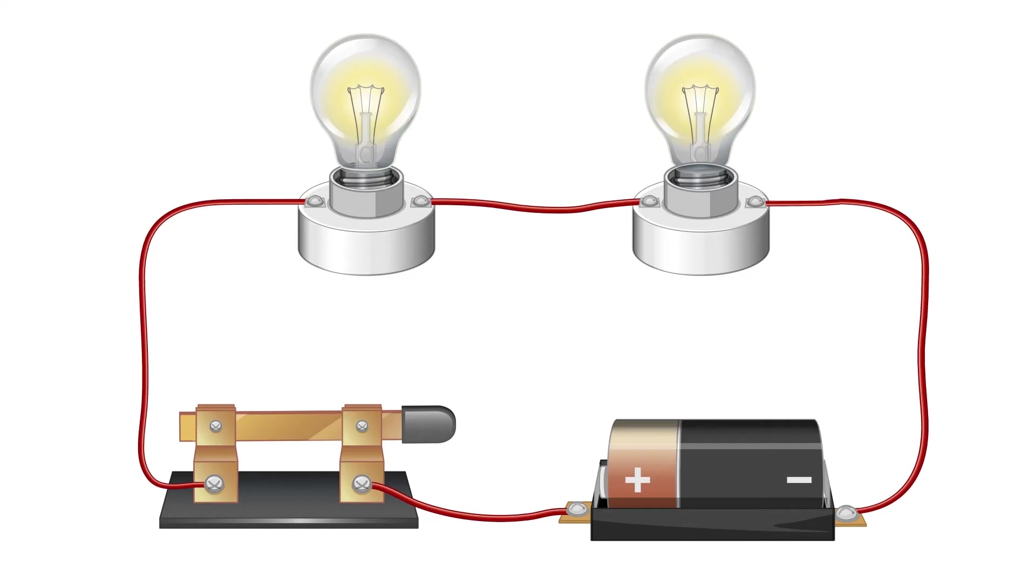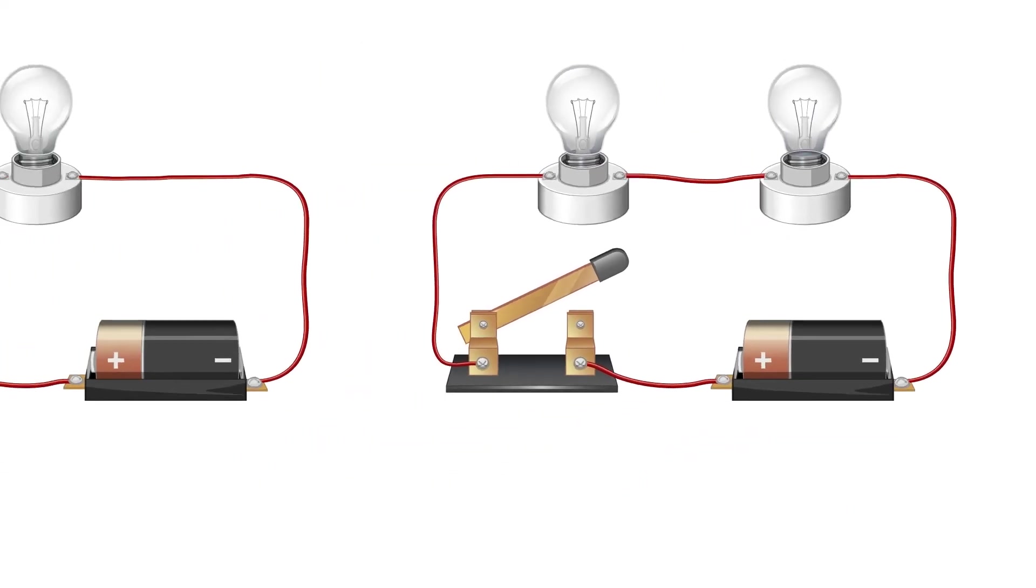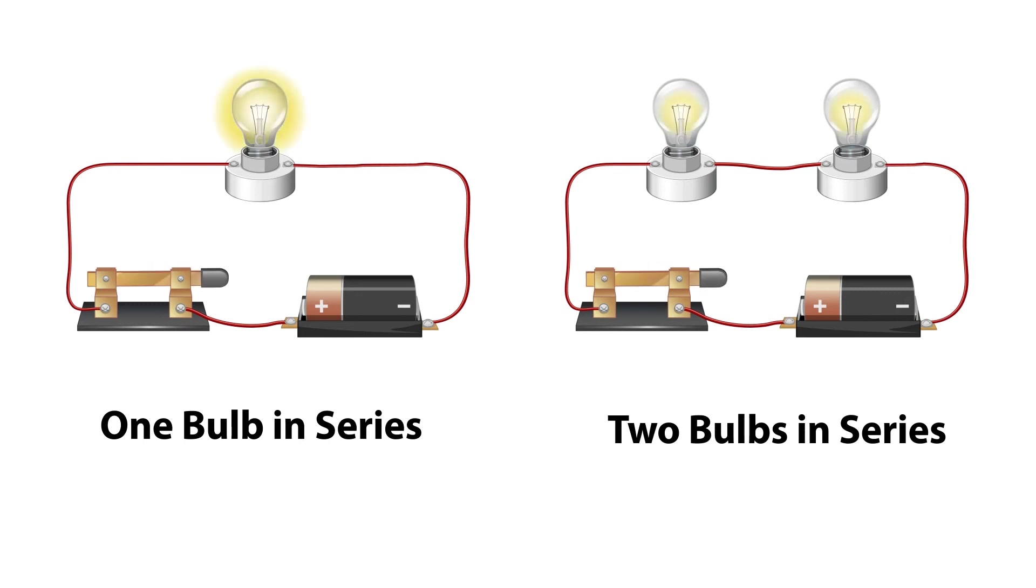the voltage is shared between the bulbs. This results in the bulbs glowing less bright than when there was just a single bulb in the circuit. So adding a bulb in series decreases the brightness of the bulbs.